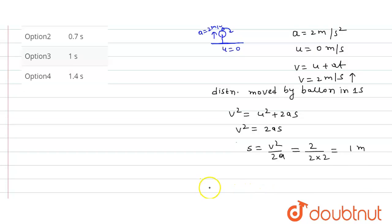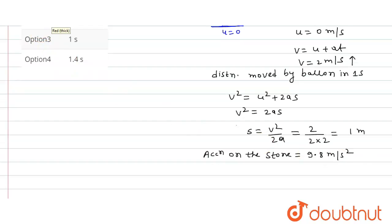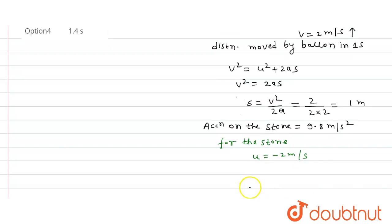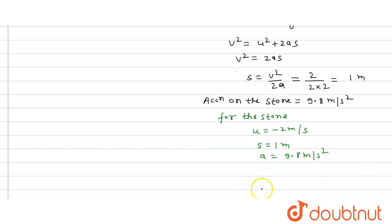Now, the acceleration on the stone is 9.8 meters per second squared due to gravity. For the stone: u equals minus 2 meters per second (upward, so negative), s equals 1 meter, acceleration equals 9.8 meters per second squared. Here u is negative as the initial velocity is in the upward direction.